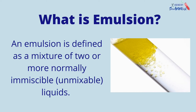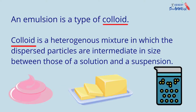What is emulsion? An emulsion is defined as a mixture of two or more normally immiscible liquids. An emulsion is a type of colloid.